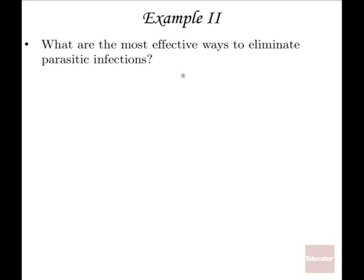What are the most effective ways to eliminate parasitic infections? Remember from the introductory eukaryotic lecture: eukaryotic cells resemble one another — they have the same type of architecture. So it is much more difficult for the human immune system to recognize an infection from another eukaryotic cell, whereas it's more identifiable to have an infection from a prokaryotic organism like bacteria, because the antigens expressed on a prokaryotic cell are much more different from those on another eukaryotic cell.